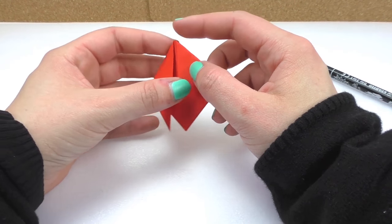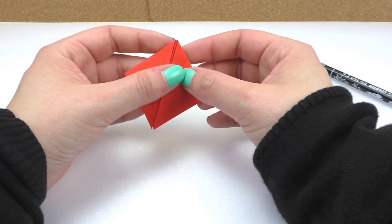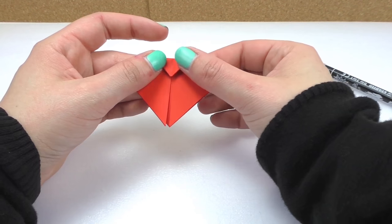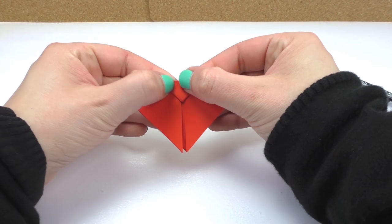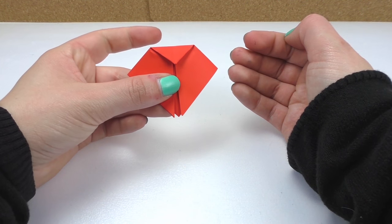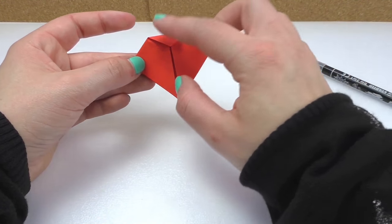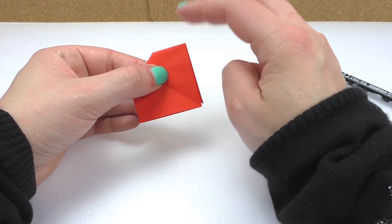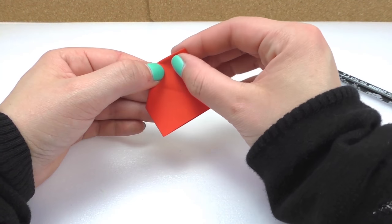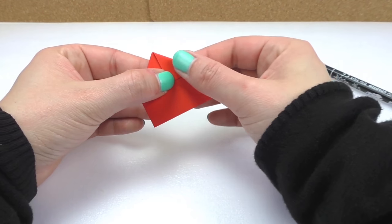This is going to be the top and we're going to fold it towards us like this. There we go. That's the face of our ladybug. And then we're going to turn it around and this corner we're going to fold it a little bit to the inside.